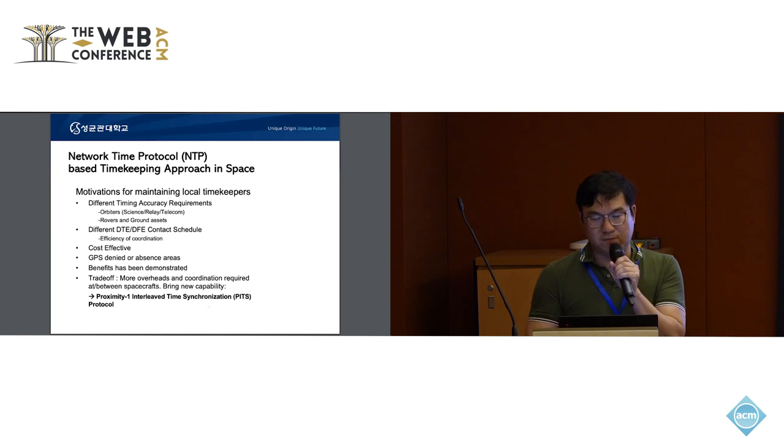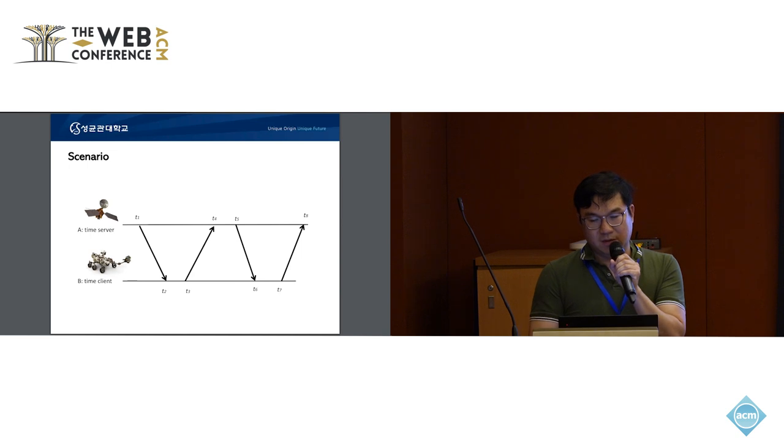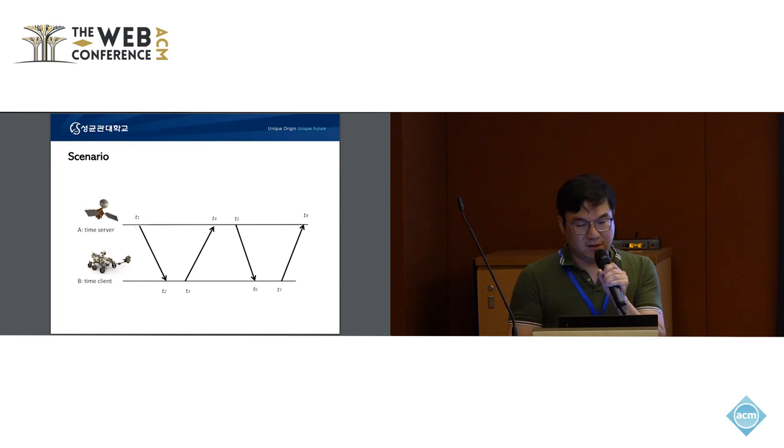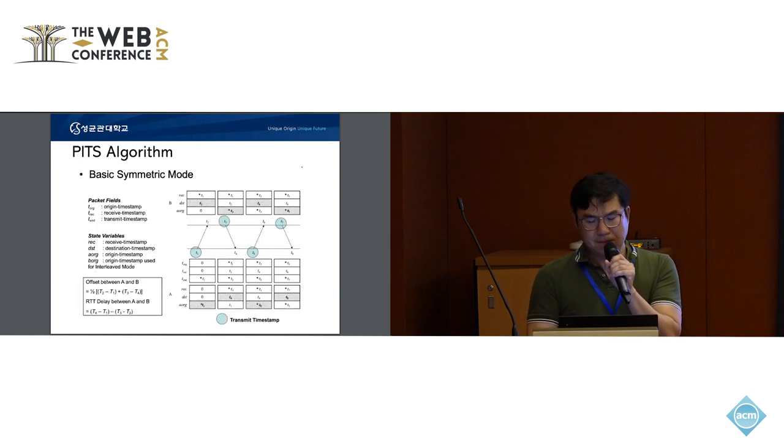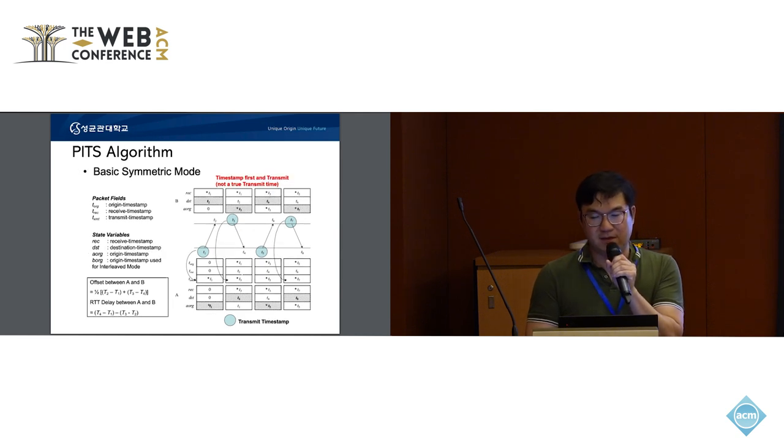This is a very similar diagram where the time client we assume is a rover and then the time server is maybe a satellite orbiting the Mars. Assume we have a time server in the Mars orbiter that has more accurate time information and tries to send the time information to the client rover here. This is called the PITT protocol and it has these variables. Actually, you can compute the time delay and offset in the same equation I showed you before. It has a symmetric mode and then it has an interleaved mode. But symmetric mode is actually not as accurate.